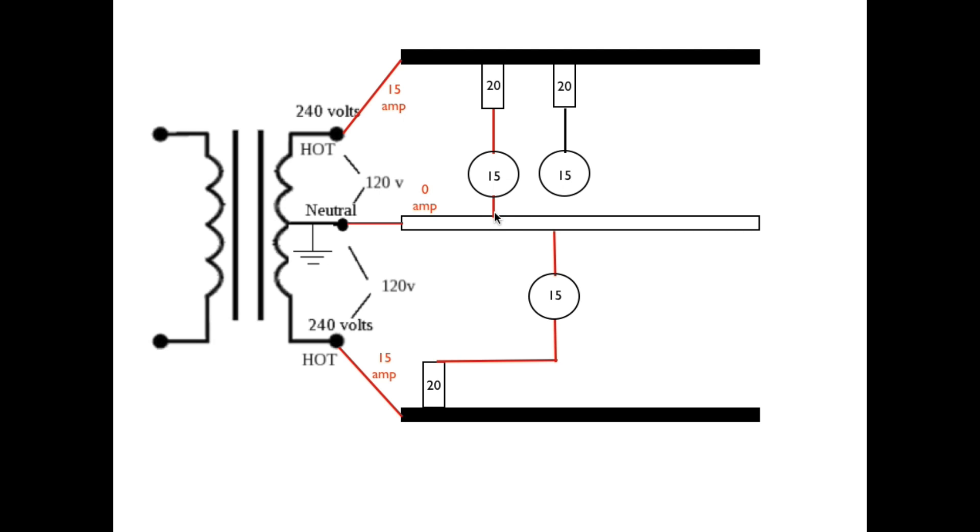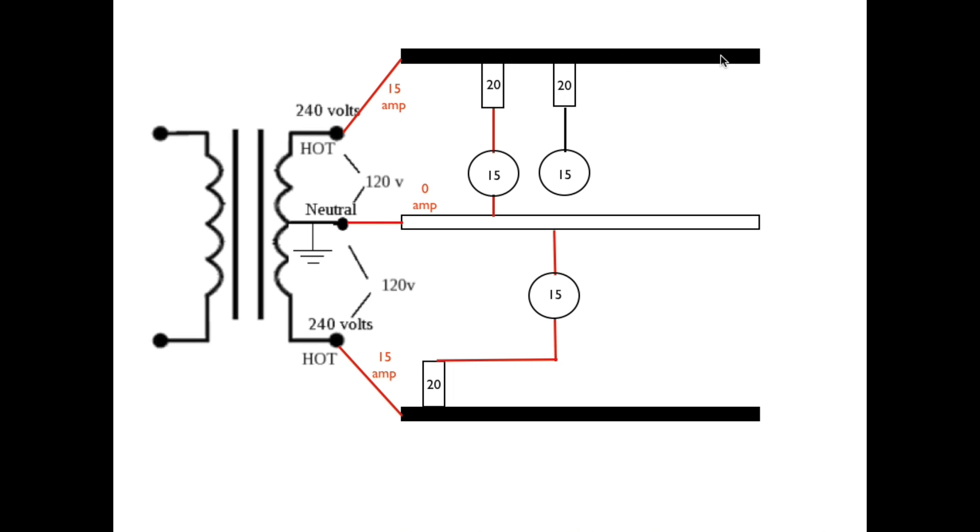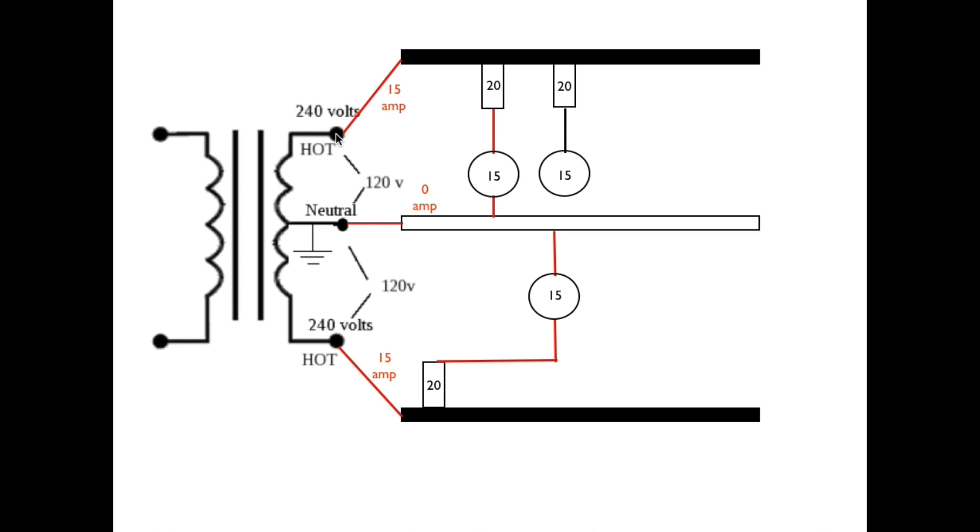Then it will go through this other 15 amp load through the 20 amp breaker to the other bus bar and back to the transformer. At that point, you will have 15 amps on this line and 15 amps on this line. Now, remember, it isn't 15 plus 15, it's 15 because the voltage is doubled.